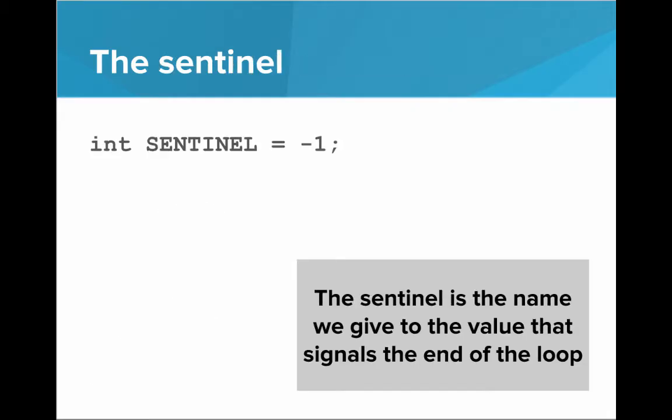There's one more thing I'd like to introduce, and that is the sentinel. The sentinel is simply the name that we give to the value that signals the loop should stop. I've written it in all caps here to indicate that it is a constant value — it's not a variable that's changing. It should always have this value, negative one, throughout the entire program.